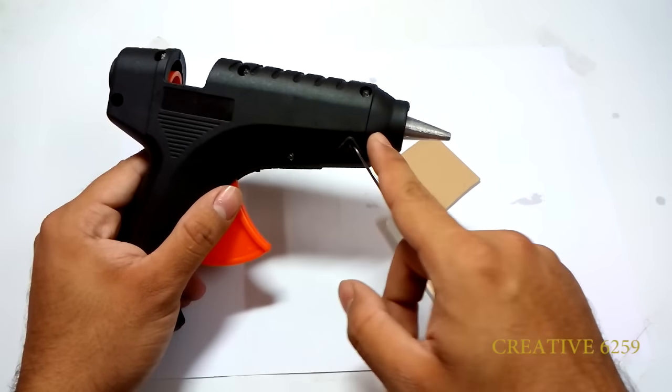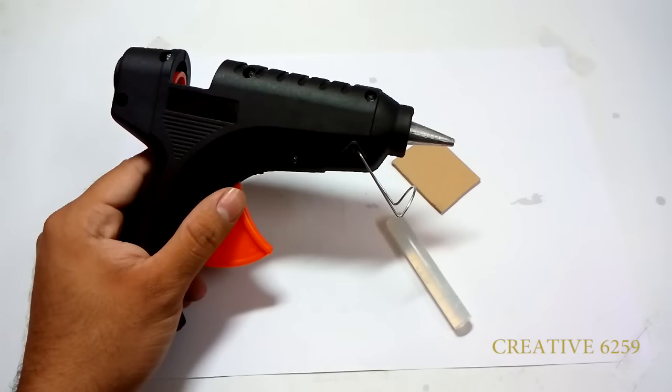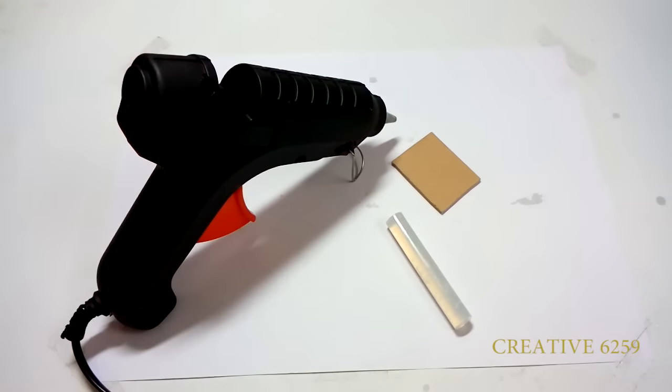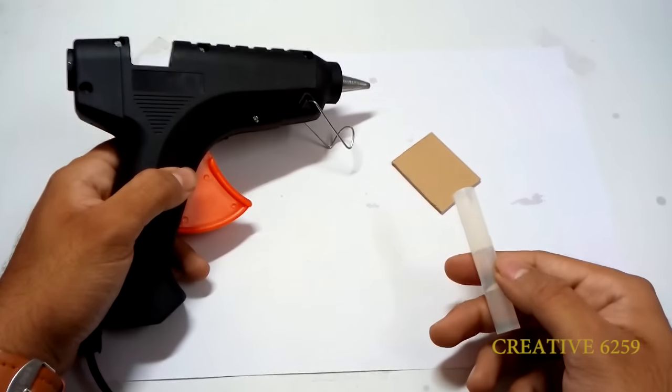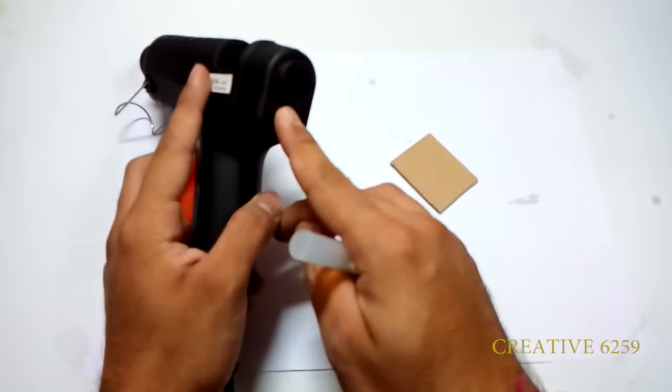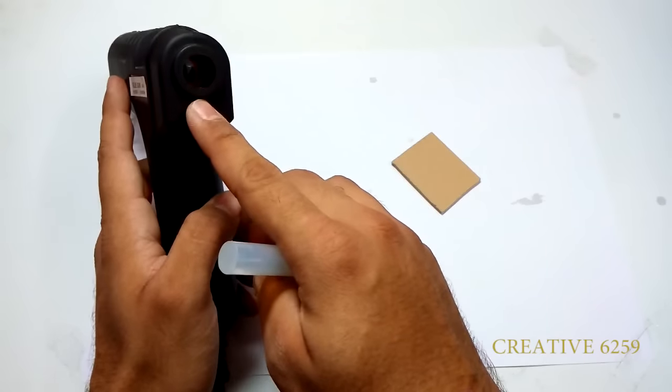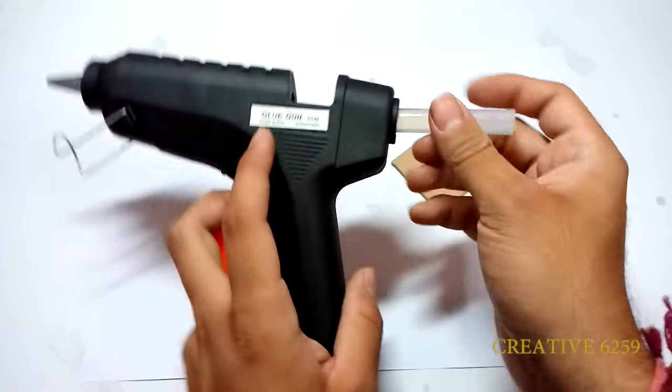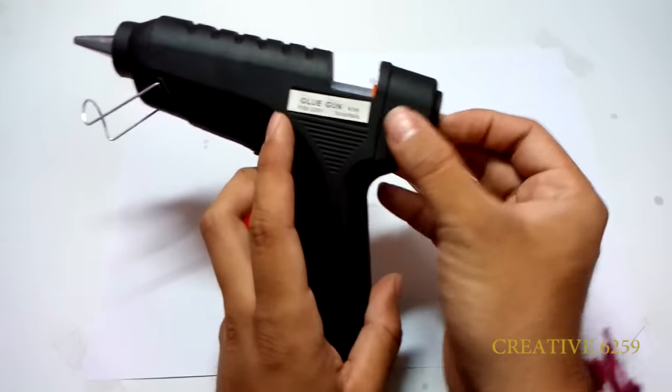When the glue gun is plugged in, please do not put the gun horizontally because the glue can spread backwards if you put it horizontally and it can damage the parts or stick with other parts. Let's first put this small glue stick inside the gun. Here is the hole provided to insert the glue stick.